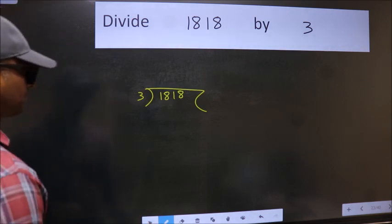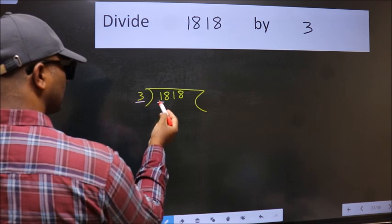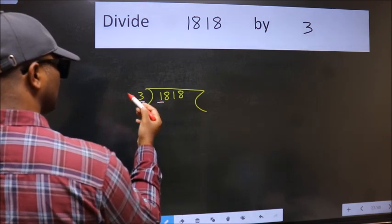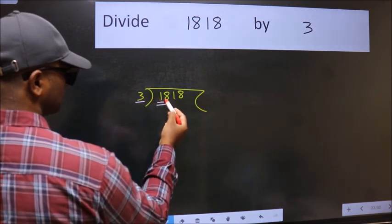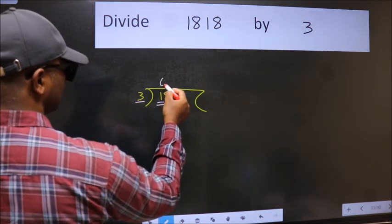Next. Here we have 1 and here 3. 1 is smaller than 3. So we should take two numbers, 18. When do we get 18 in 3 table? 3, 6, 18.